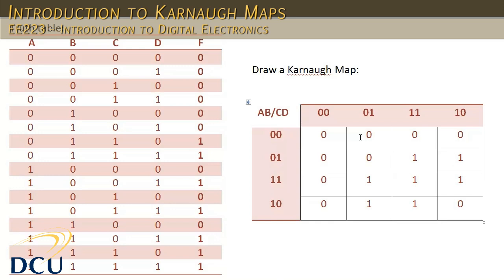We could also group adjacent cells that roll around or wrap around. So this table wraps around — this edge, if you can imagine, is connected to this edge. So if there were two cells here, let's say there was a one-one there, we could group these two cells and these two cells together to create a new group. In our case there's not a one-one here, so this is the grouping that we have to perform.